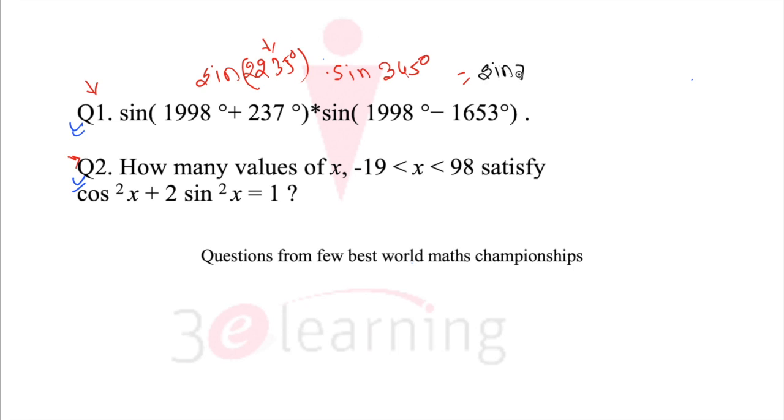So this becomes sin 75 degrees. And this one is nothing but sin minus 15 degrees because 360 minus theta, fourth quadrant. So we can say take the minus common. Sin 75 is nothing but cos 15 degrees. This one is cos 15 and this one is nothing but sin 15. We have taken minus out.